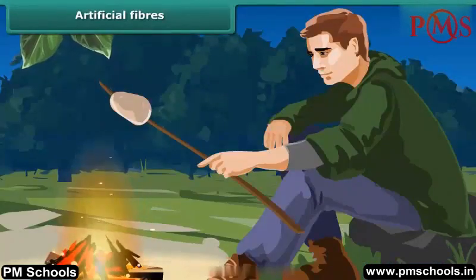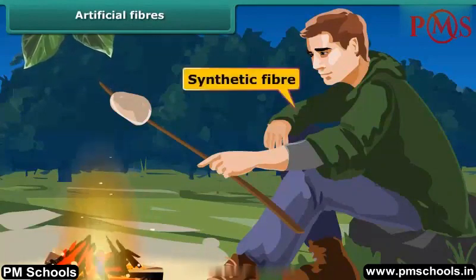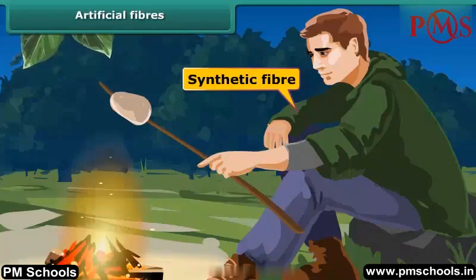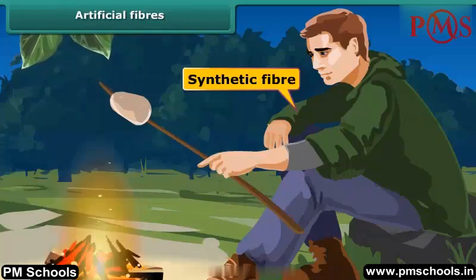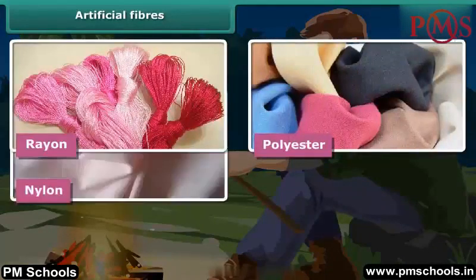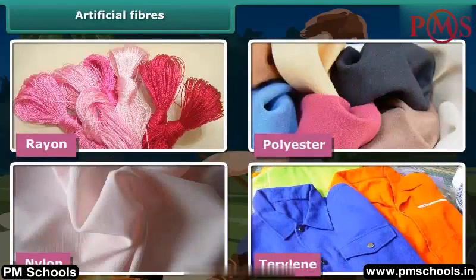You might have heard that we should not wear synthetic clothes while working near fire. What are synthetic clothes made of? These clothes have yarns of man-made artificial fibers. These fibers catch fire very easily. Some examples of synthetic fibers are rayon, polyester, nylon, and terrylene.